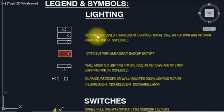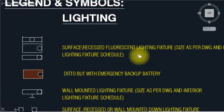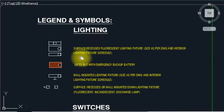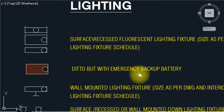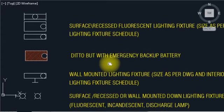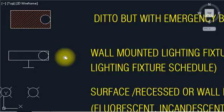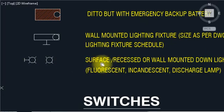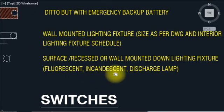Starting with lighting — you can see the symbols 1, 2, 3 like that. This is surface recessed fluorescent lighting fixtures sized for the drawings. You can see here interior lighting for future schedules. For lighting, this one we have to use — this is D2 with emergency backup battery. Wall mounted lighting fixtures as per size, fine interior lighting fixtures schedules. This is the lighting navigation symbols — surface and recessed, wall mounted, and down lighting fixtures.